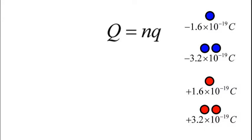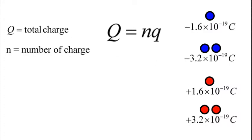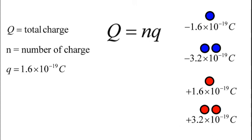The general formula for quantization of charges is: the total charge Q is equal to the number of particles N multiplied by the elementary charge e. Q stands for total charge, N stands for number of charges, and e is the constant 1.6 times 10 to the power of minus 19. Let's solve some questions to understand better.